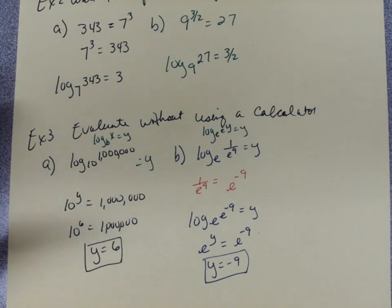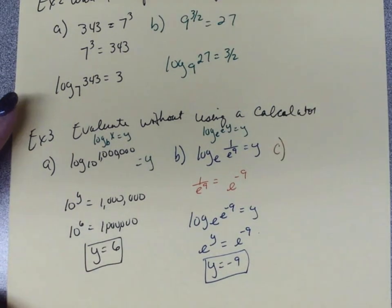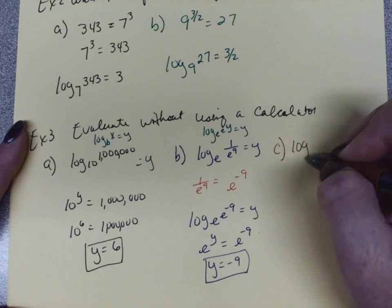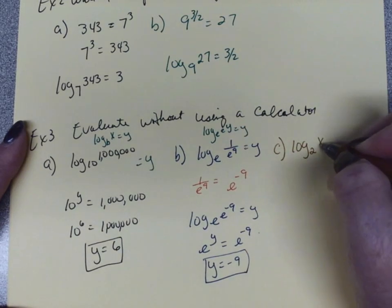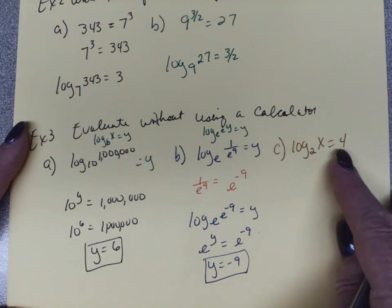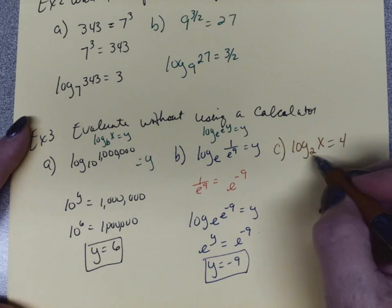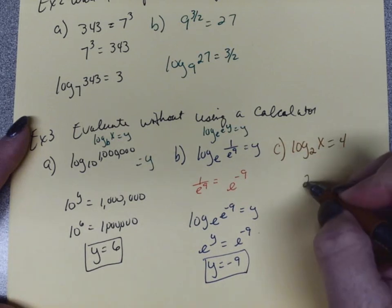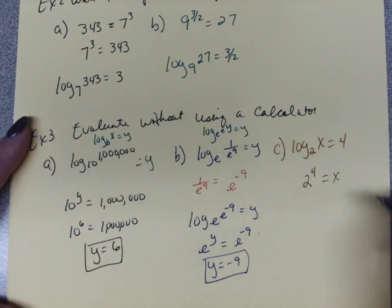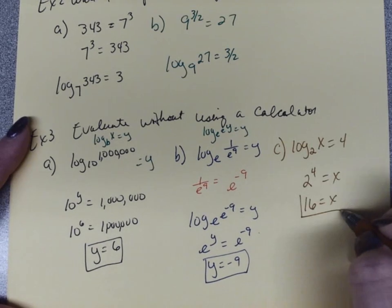For part c, log base 2 of x equals 4. Changing to exponential form, we get 2 to the 4 equals x. 2 to the 4th power equals 16, so x equals 16.